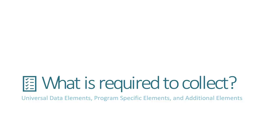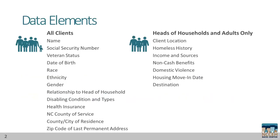Welcome back for part 4 of the Intro to HMIS Data Standards Training. The next section will review the data elements required for agencies participating in HMIS to collect. These are also called Universal Data Elements, Program Specific Elements, and Additional Elements. We'll show you what elements are required for everyone, just for some project types, and for just some funding sources. Here are the data elements required for all funding sources.